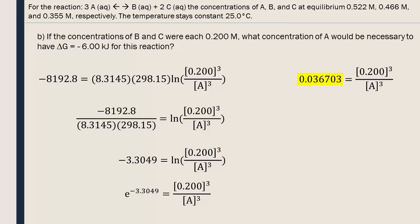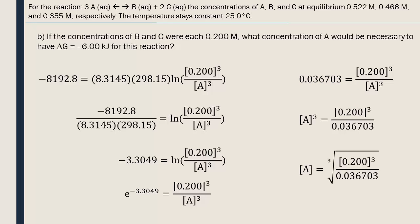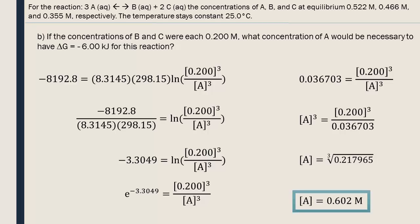Lots of decimal places are kept in these calculations in order to not lose any precision. We isolate A by bringing it to the left side of the equation and take the cubic root. Everything can now be put into your calculator. We finish with a concentration of 0.602 moles per liter, rounding our answer to three significant digits.